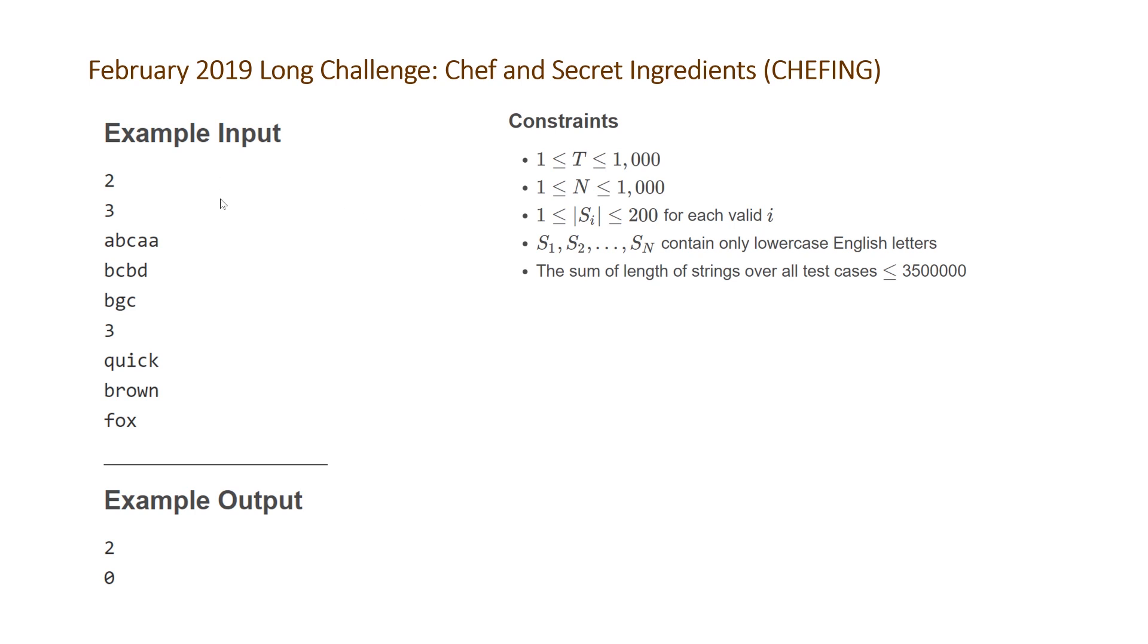If we were to brute force this, it would involve going through each test case, and for each letter, checking to see if it occurs in every single string. The time complexity would be t test cases times n strings times s characters times 26 letters. Breaking that down: 10^3 for t, 10^3 for n, 2×10^2 for s, and 2.6×10^1 for the 26 letters. Multiplying these, we get 5.2×10^9.